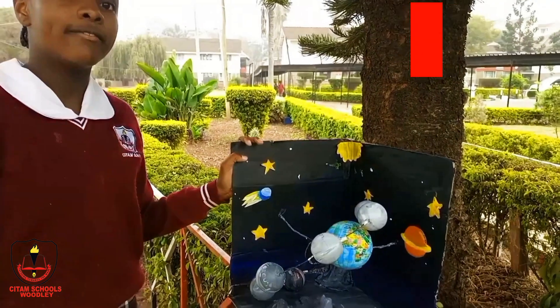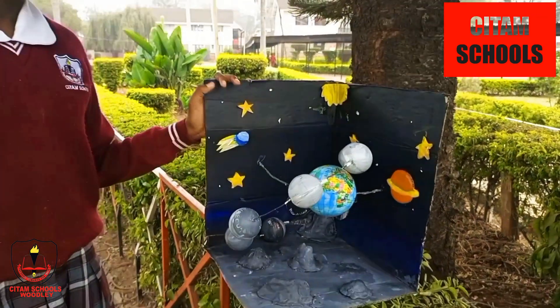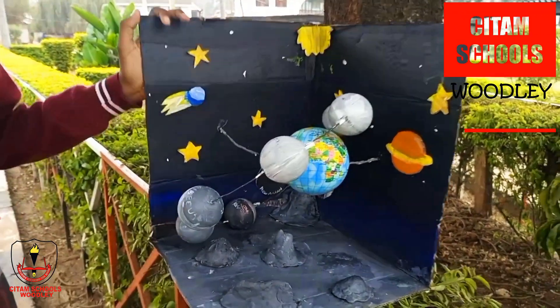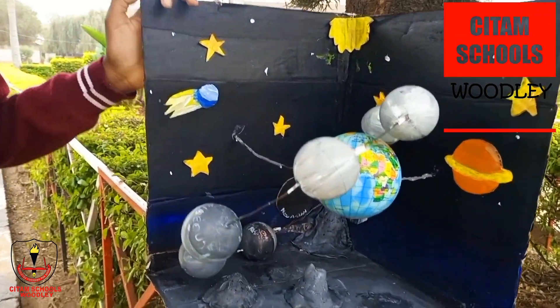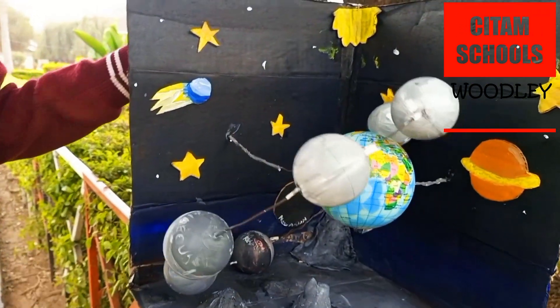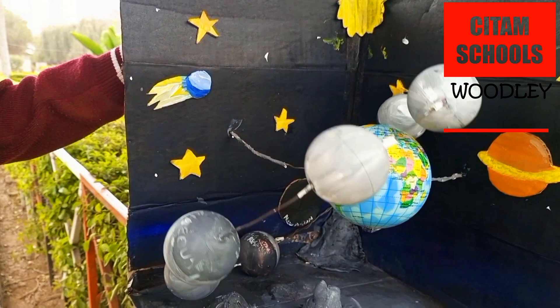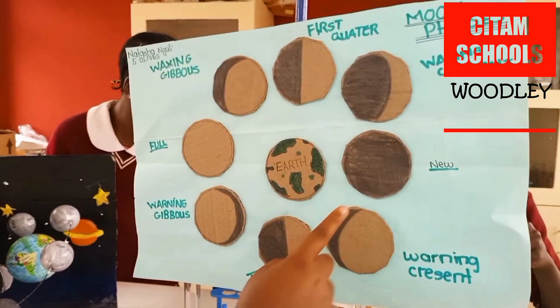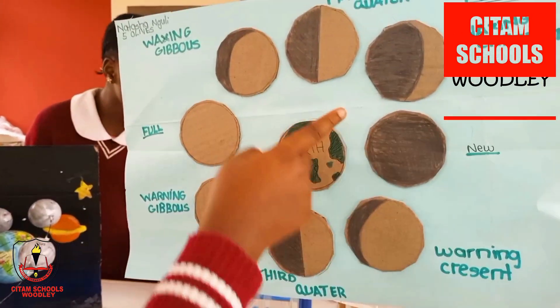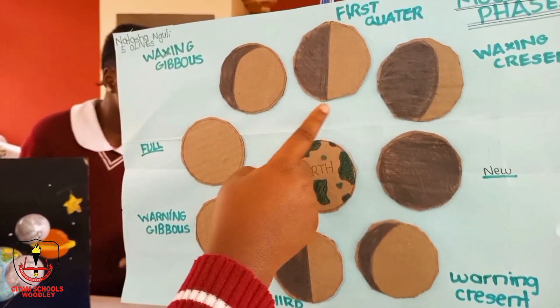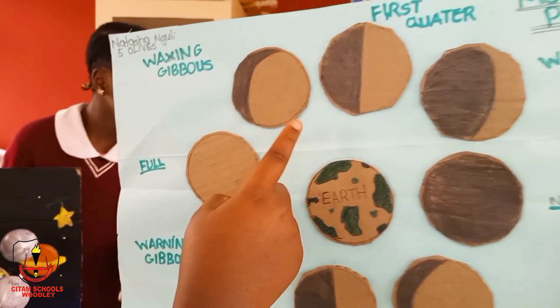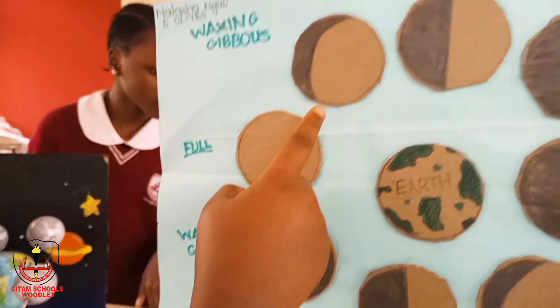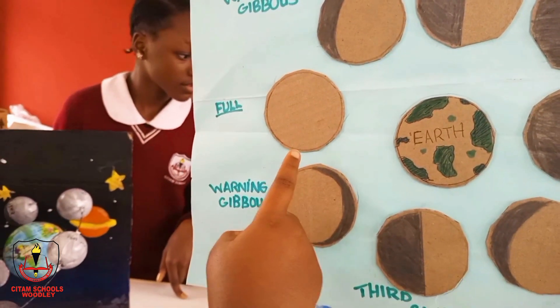The moon's orbit is tilted by 5 degrees, so the sun shines its light on the moon. The cycle starts at the new moon, followed by the waxing crescent, first quarter, waxing gibbous, then the full moon.